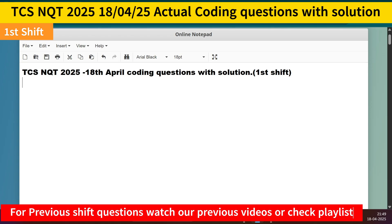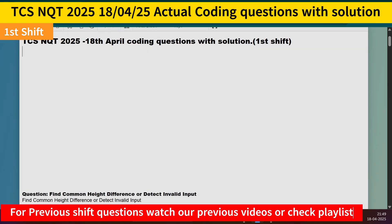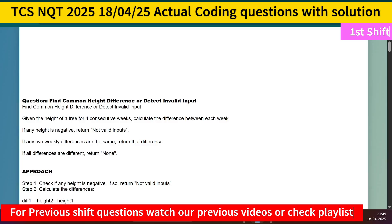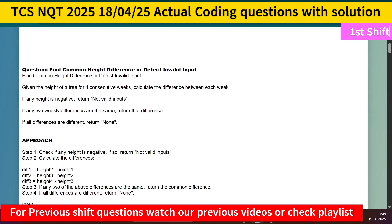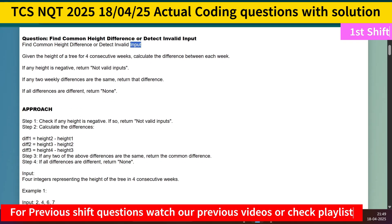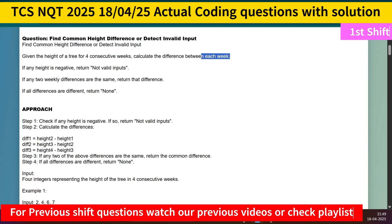Without wasting time, let me come to the first question asked today. The first question is related to finding the common height difference or detecting invalid input. You are given the heights of three or four consecutive peaks, and you have to calculate the difference between each peak. If any height value is negative, you have to return 'not valid input' as output.